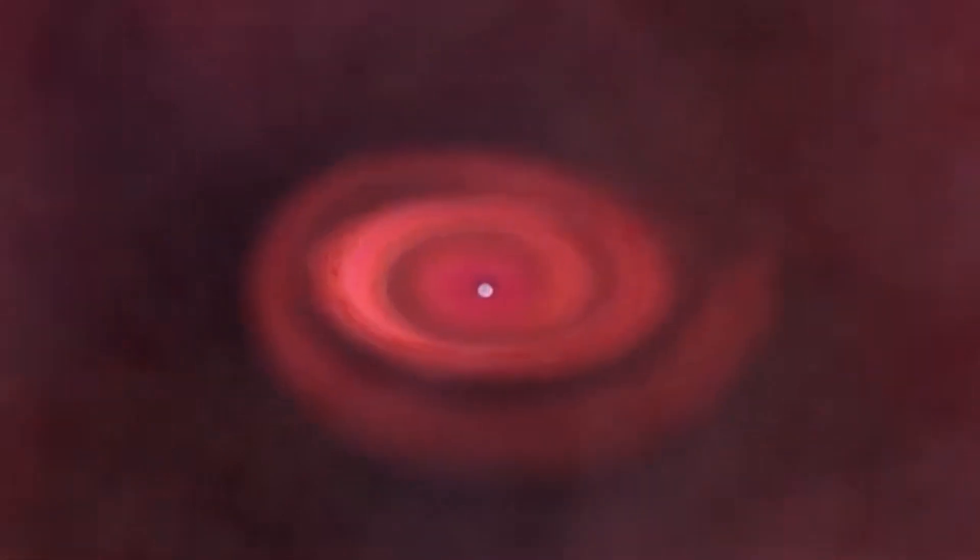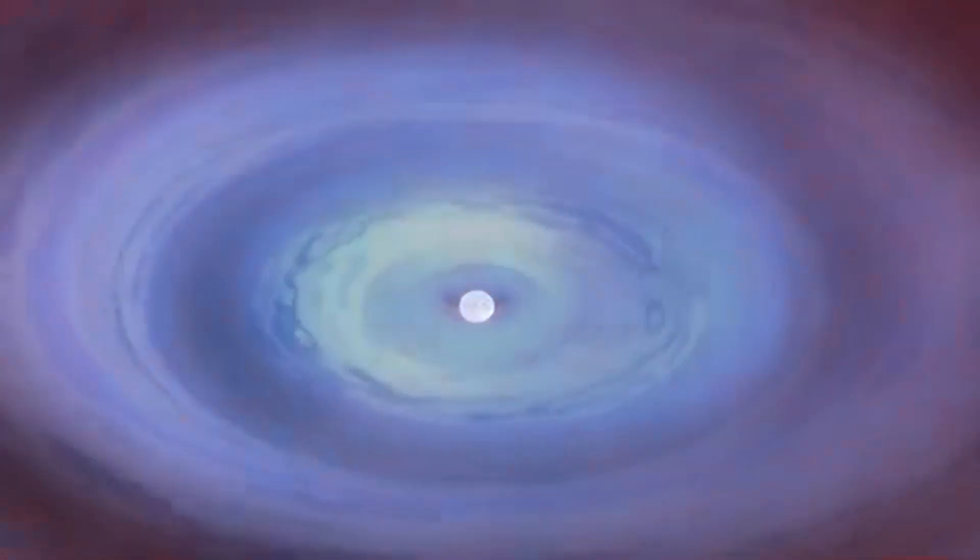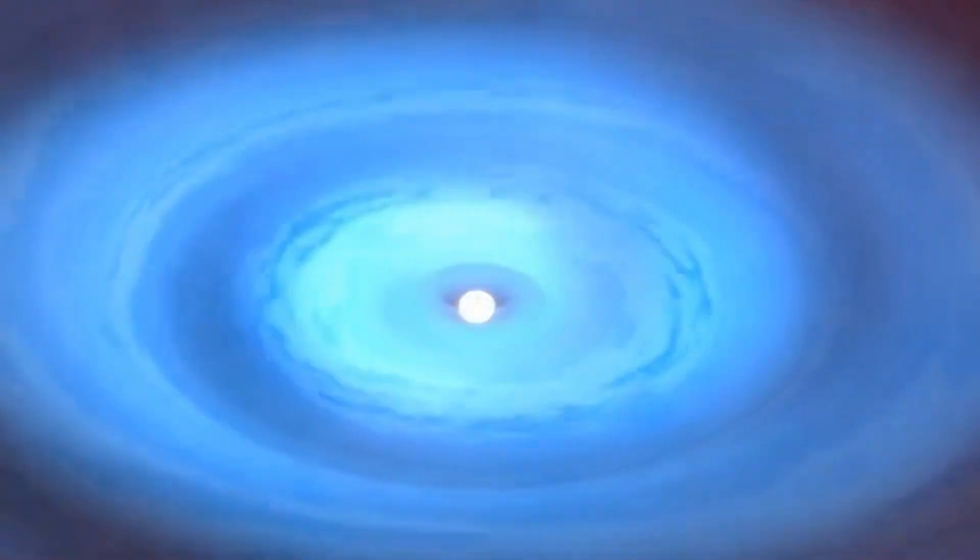Black holes form when massive stars collapse under their own gravity after running out of fuel. This collapse creates a singularity, an infinitely dense and tiny point at the center of the black hole. Around the singularity, there exists an event horizon, which is the boundary beyond which nothing can escape.